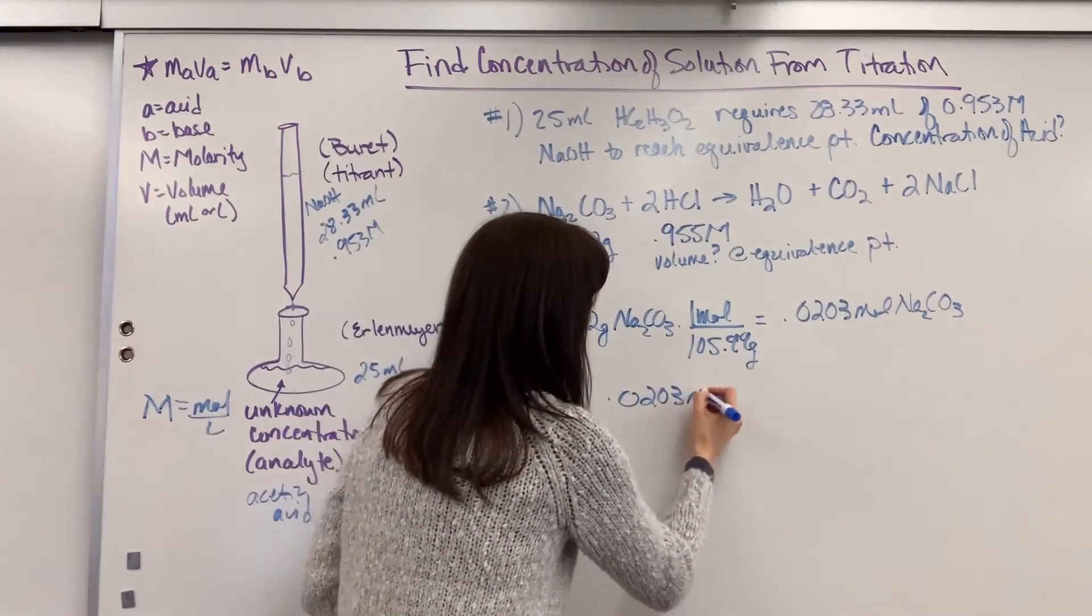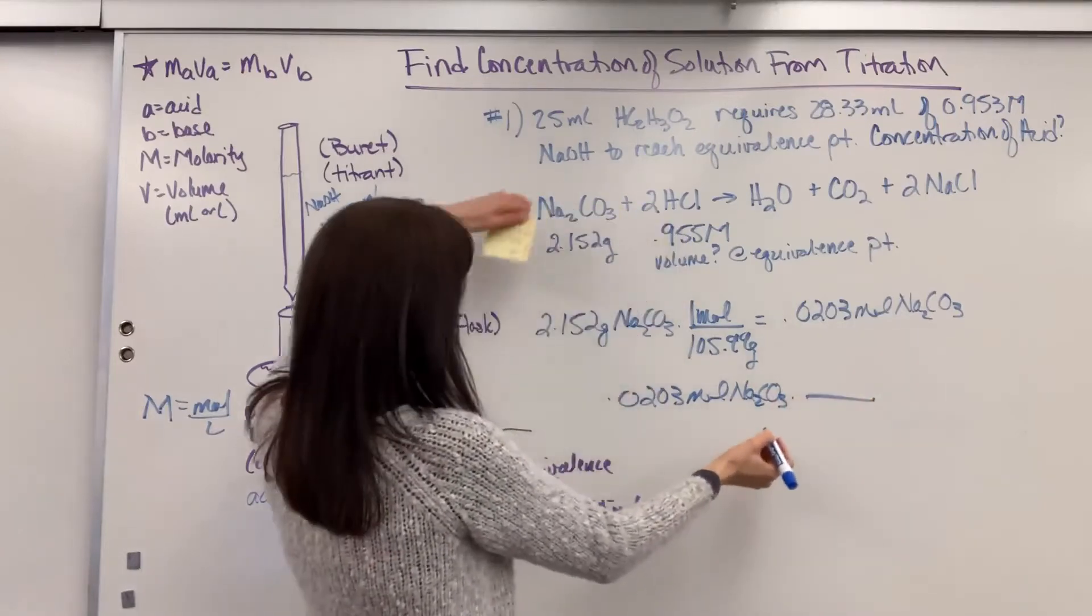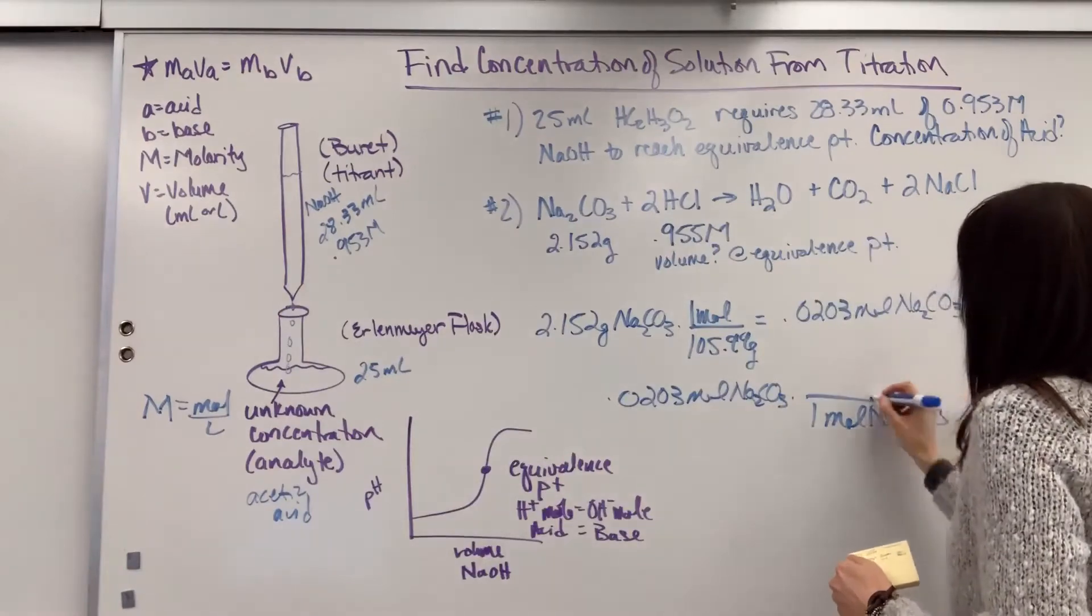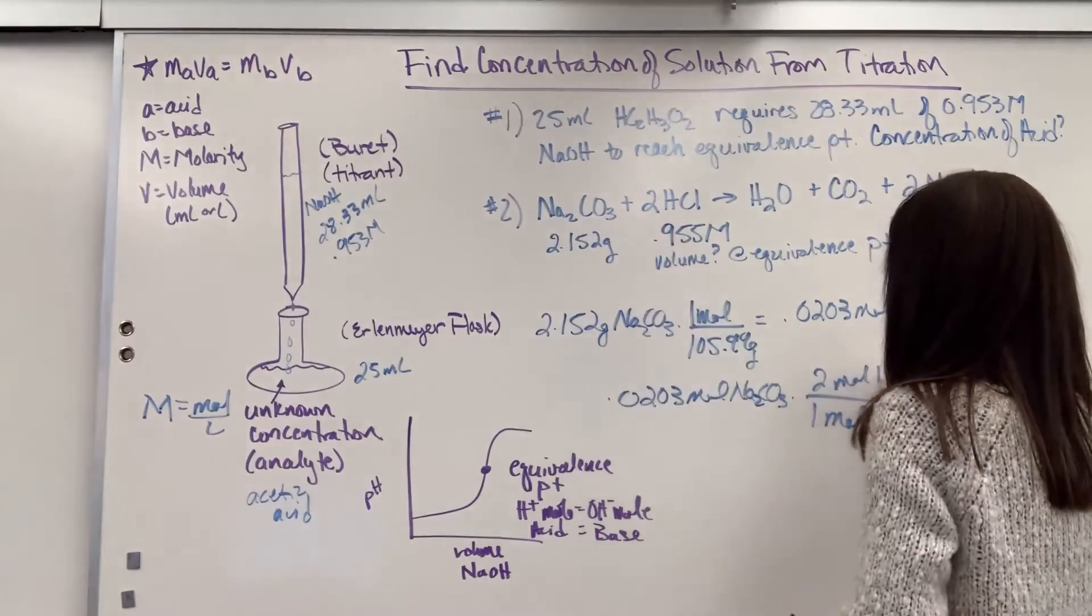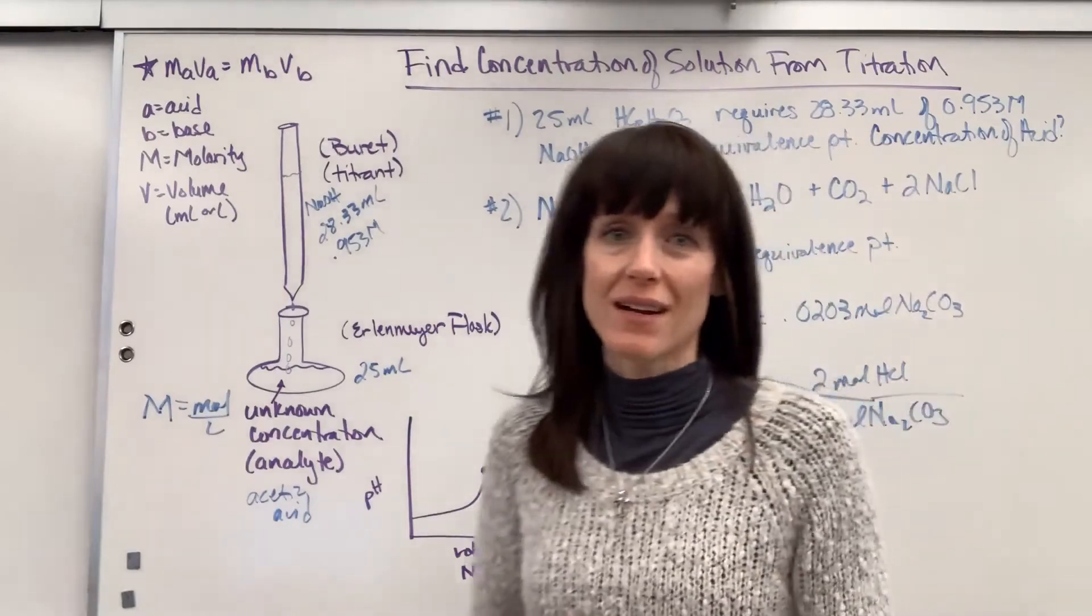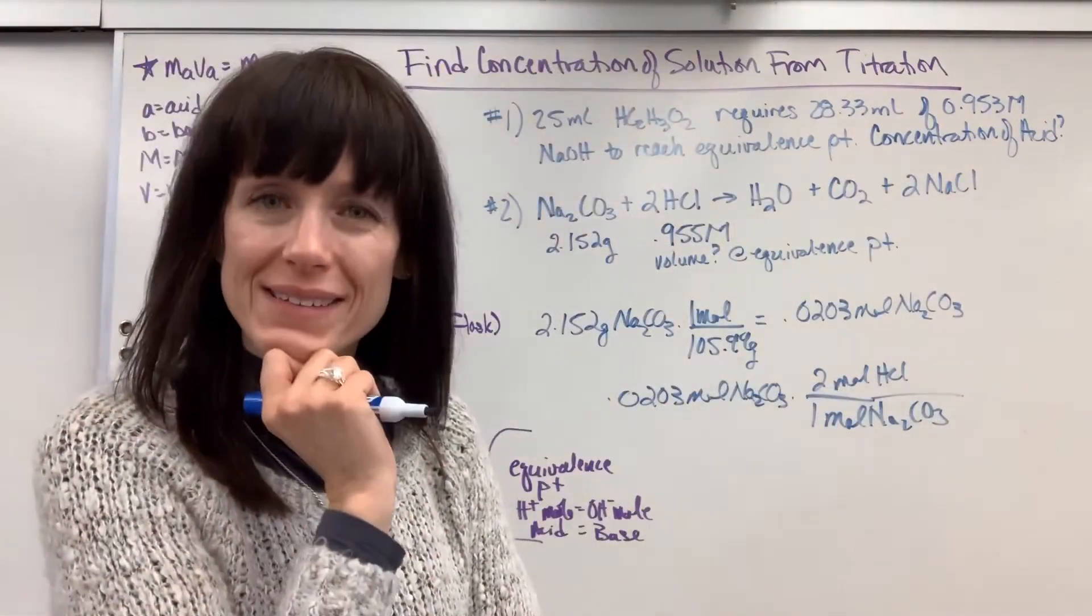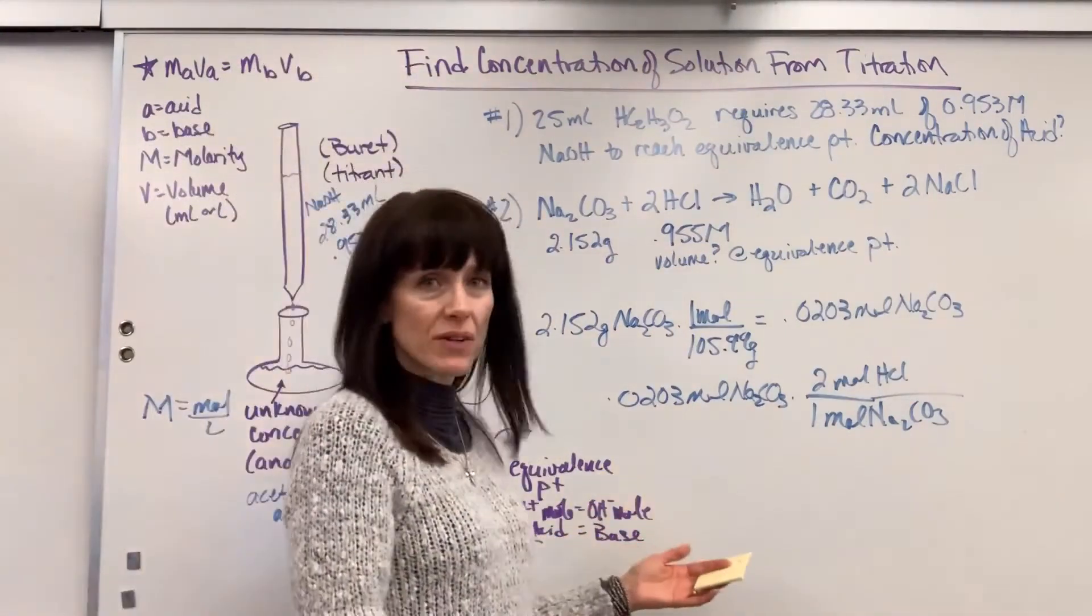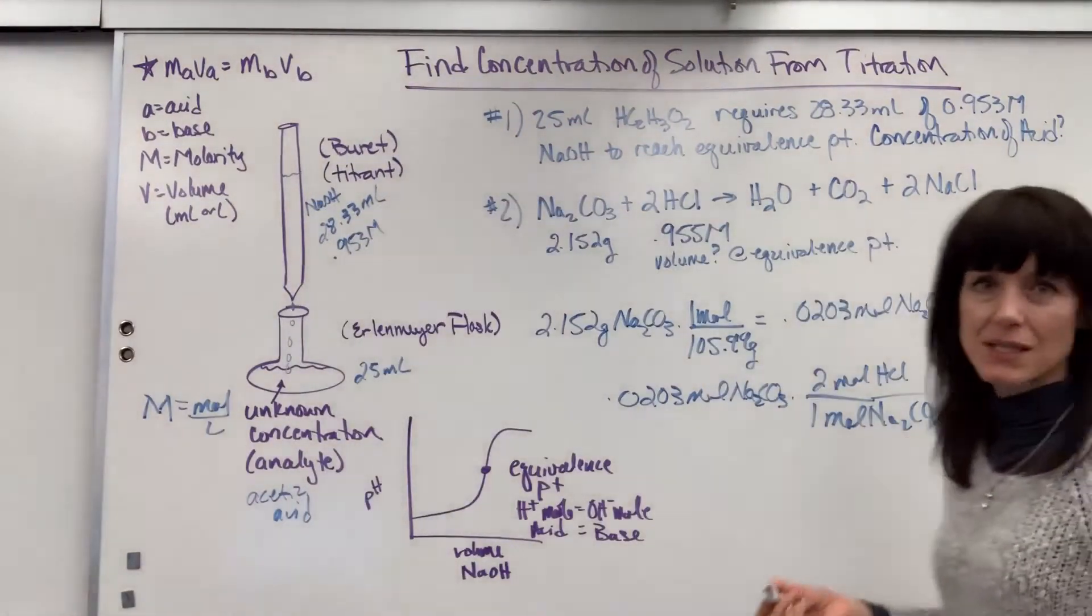0.0203 moles of sodium carbonate. And then check it out. One mole of that sodium carbonate is going to react with how many moles? Two. Two moles of the HCl. Now, if I stop right there, that gives me moles of HCl. But what do we want? We want volume. So I'm going to add one more step on this. We could very easily multiply this by two and get the 0.0406 moles.